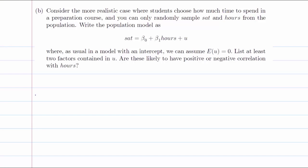In part B, we consider the more realistic case where students choose themselves how much time they want to spend in the preparation course. We cannot force them not to take the course and we cannot force them to take it either. We can only randomly sample SAT and hours from the population, and the model is a very standard model: SAT equals beta zero plus beta one hours plus U. As usual, we have the expectation of U equals zero.